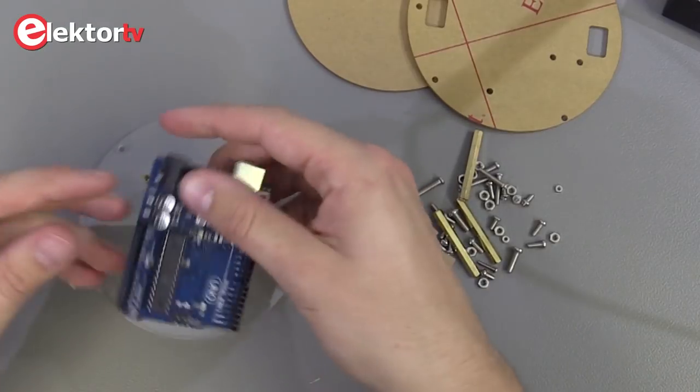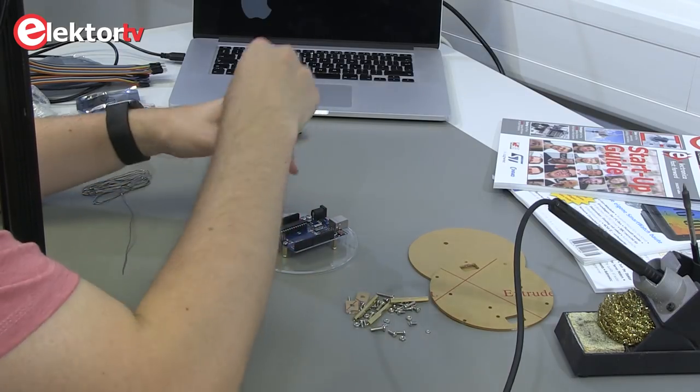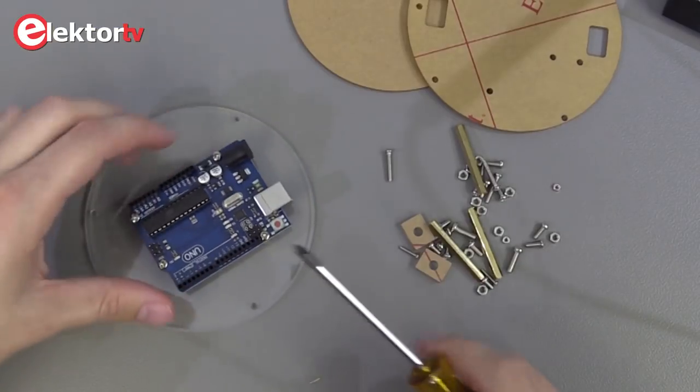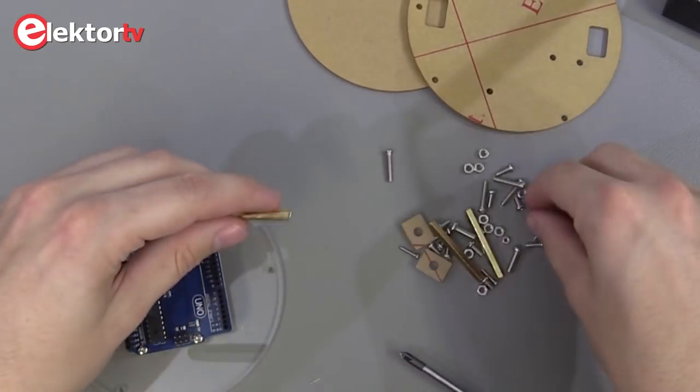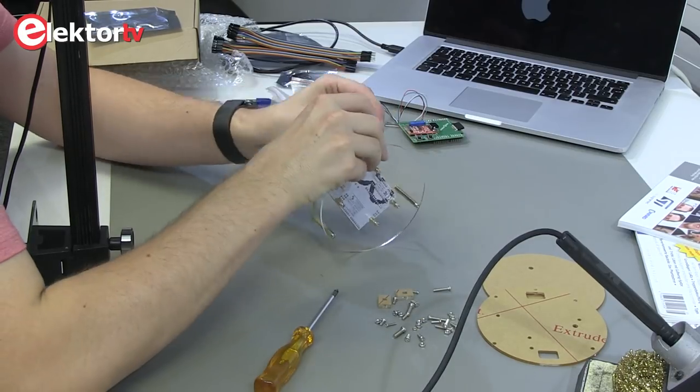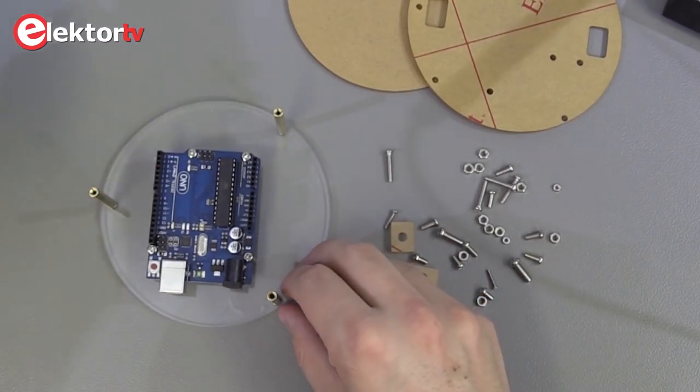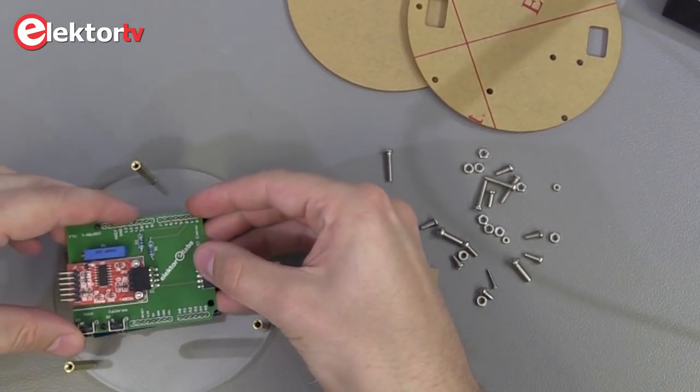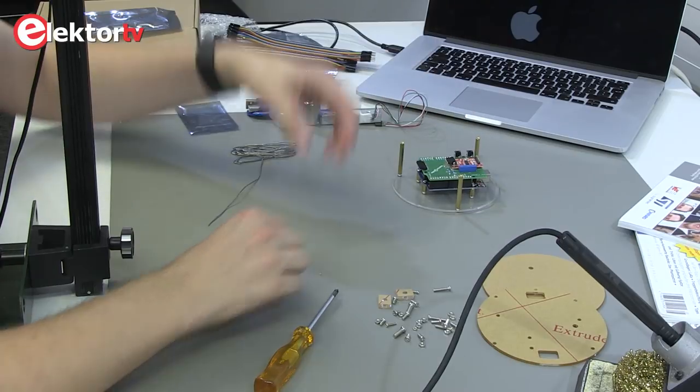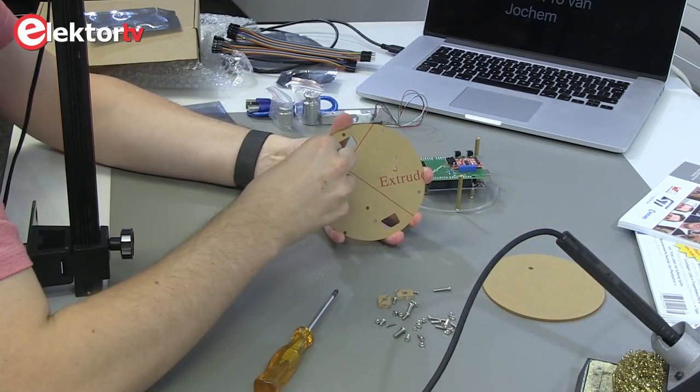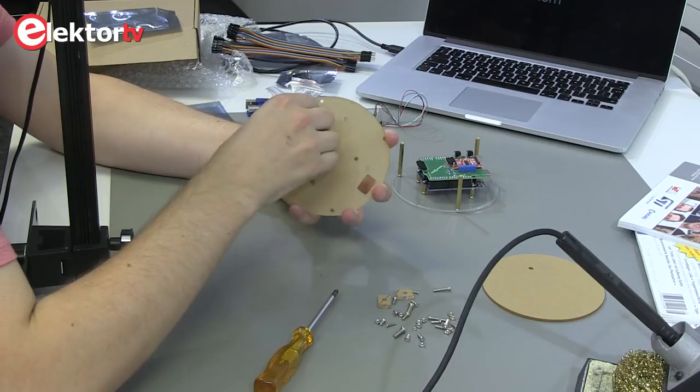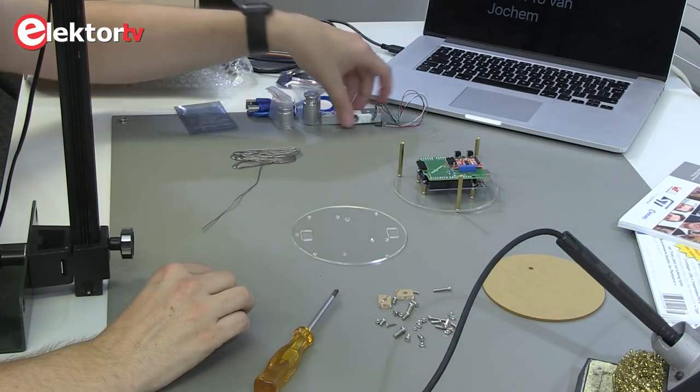Let's take the Arduino Uno. Now we need the long spacers. Next we take the PCB and stack it on top of the Arduino. This is done. We put it aside for now and take the second plexiglass plate.